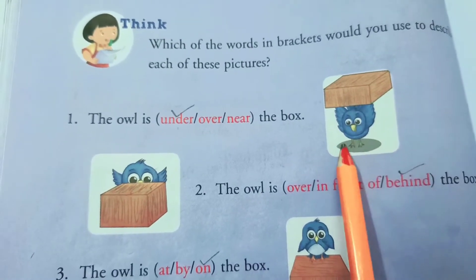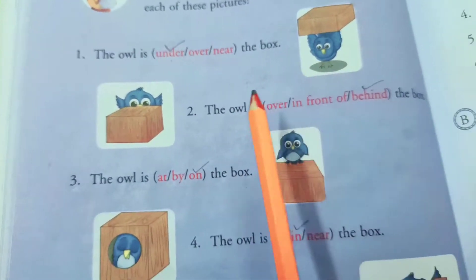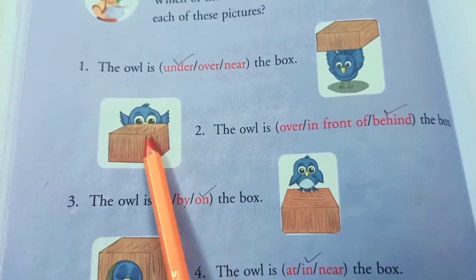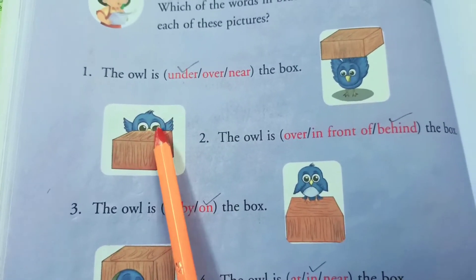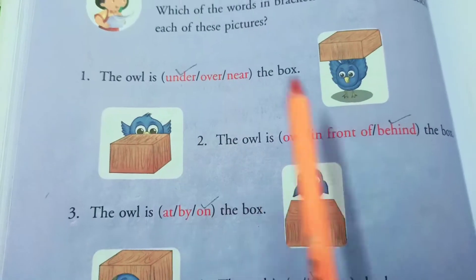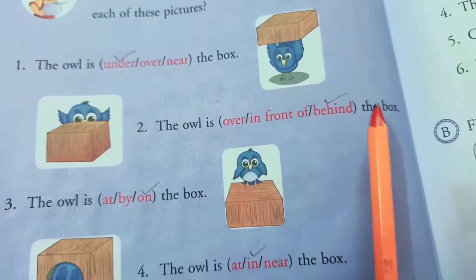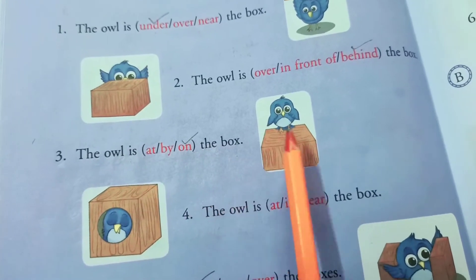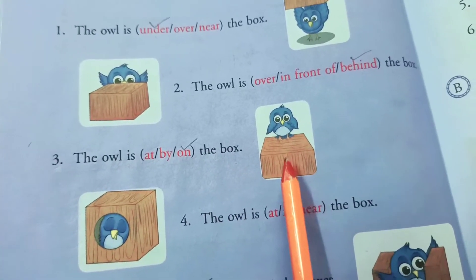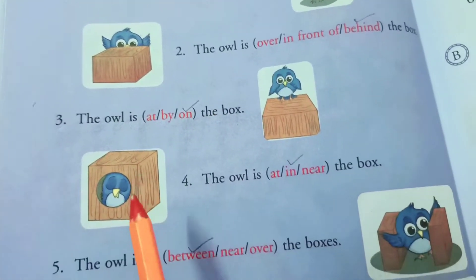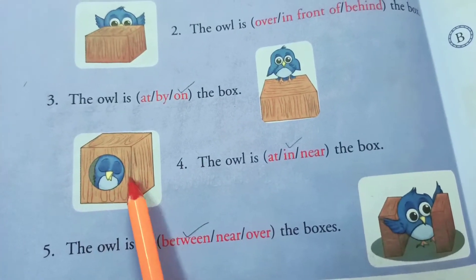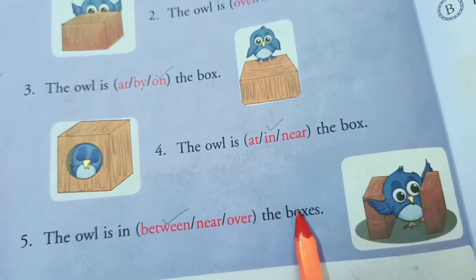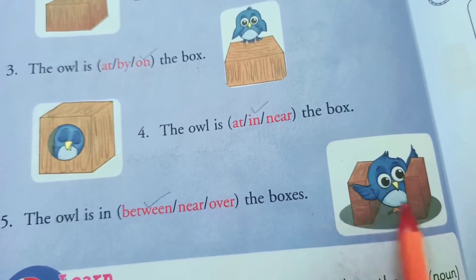The owl is — where is the owl? The owl is behind the box. The owl is on the box. The owl is in the box. The owl is in between the boxes — now we can see two boxes.